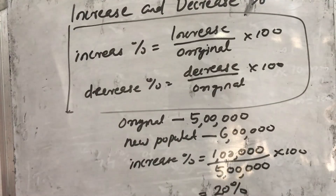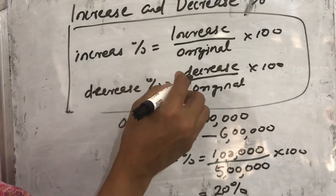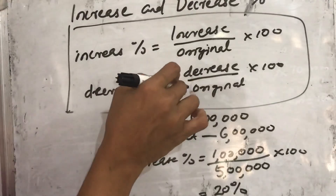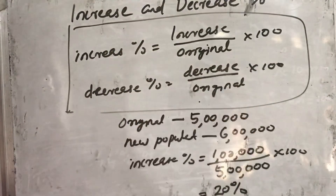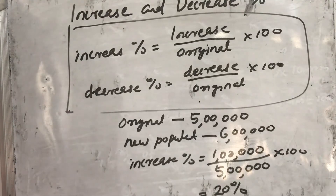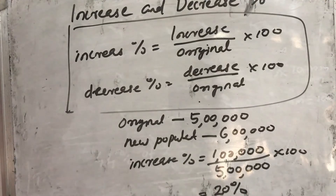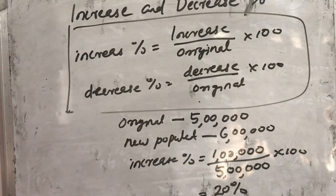The same way we can find the decrease percentage. First find the decrease from the original, then divide by the original and multiply by 100. That type of question is also in the textbook, so we want to do it as homework. Three more questions are there — you can do them as homework. If any doubts, you can ask. Thank you.